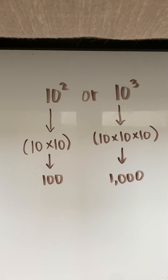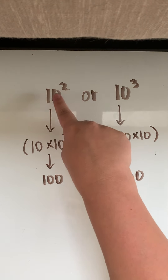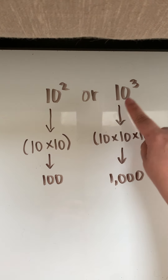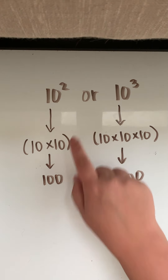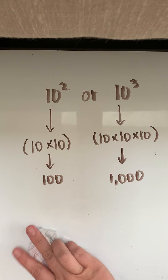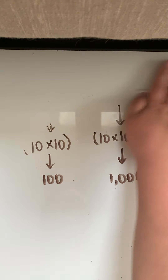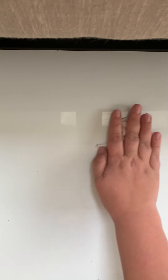So keep this in mind as we're jumping into our math lesson today. Don't get tricked — you are not multiplying these two numbers. That's not what it's saying. If it wanted you to do that, you would see parentheses somewhere. So let's go ahead and look at a problem where we're multiplying decimals by 10 to the second power or 10 to the third power.